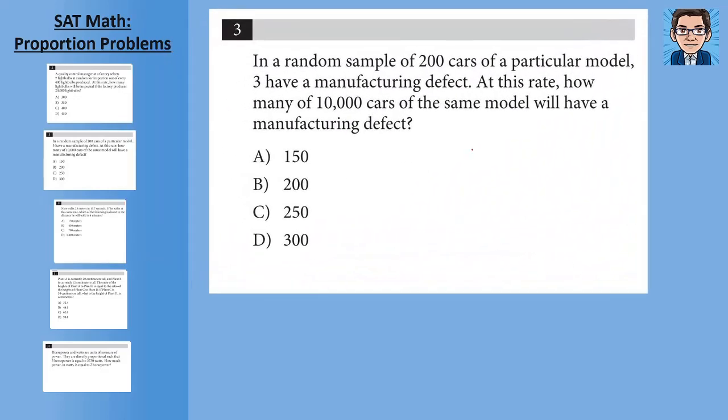Alright, the next problem, random sample of 200 cars shows that there's three defects. At that same rate, how many defects would there be out of 10,000 cars? So we're going to set this up. I'm going to do cars in the numerator and defects in the denominator. And again, it doesn't matter which one you do as long as you keep consistent. So 200 cars gets us three defects. We've got 10,000 cars. How many defects is that going to get? So the unknown is x right there.